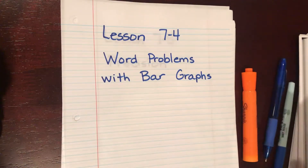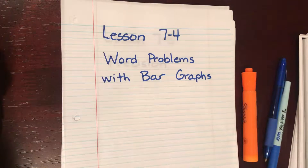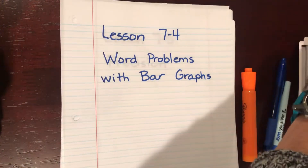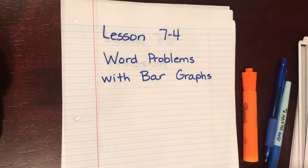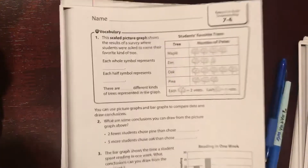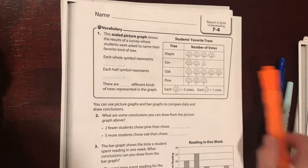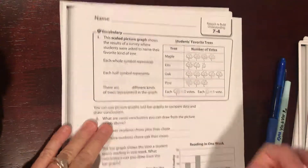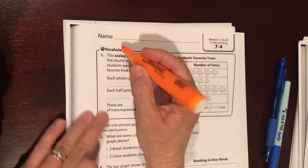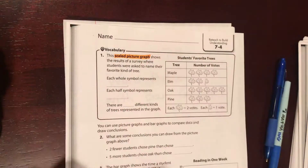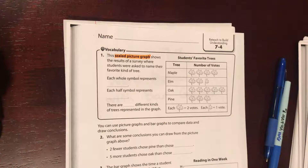Okay, lesson 7-4: solving word problems using graphs. We're going to go ahead and take our page here. We have a scaled picture graph, which again, scaled means that a symbol represents some number of items.